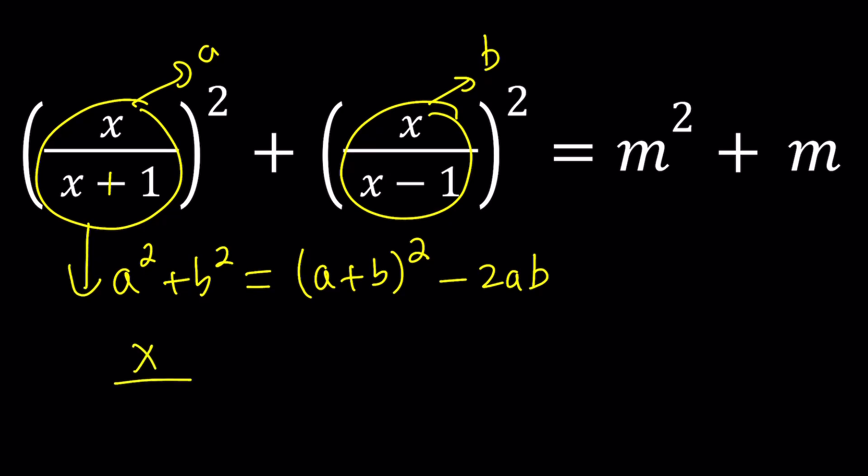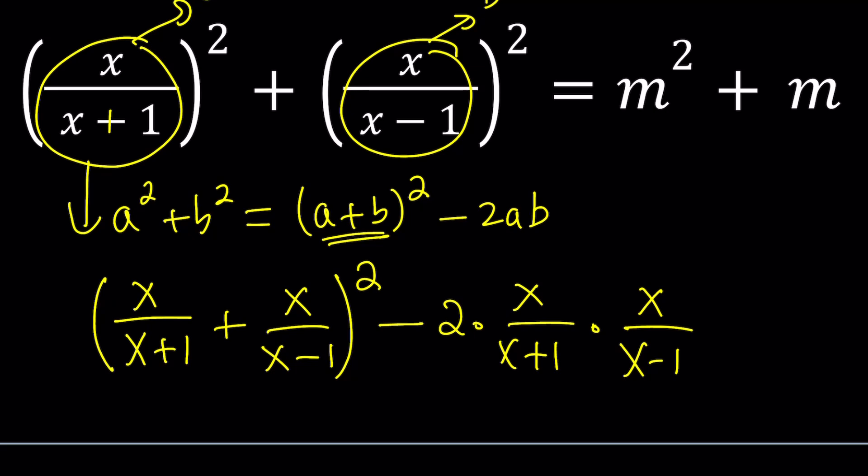Here's what it's going to look like. This expression is going to turn into x over x plus one plus x over x minus one, and then we're going to square it. From this we're going to subtract two times a times b, which is two times x over x plus one times x over x minus one. And obviously since it's the same thing, it's going to equal m squared plus m. By the way, in this case m is a given number which we usually call a parameter. When you change the values of m, the solutions are going to change. You get a family of solutions.